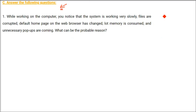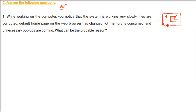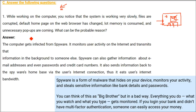Whenever you open your computer and work on it, it's working very slowly — you can see a considerable difference. The home page, if you open Chrome or Firefox, is behaving inappropriately. Memory is also being used up too much, and various pop-ups are coming that you don't even want. So what are the probable reasons? First thing is, the computer system seems to be affected by spyware.